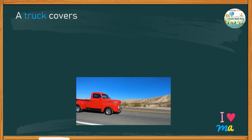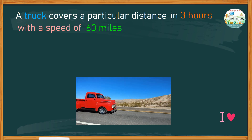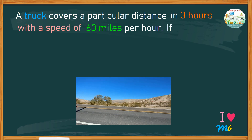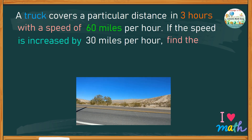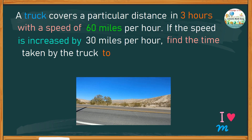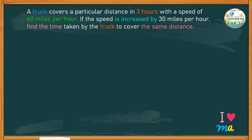A truck covers a particular distance in three hours with a speed of 60 miles per hour. If the speed is increased by 30 miles per hour, find the time taken by the truck to cover the same distance. Looking at the facts given in the problem, this shows the relationship between the speed of the truck to the number of hours to cover the same distance.